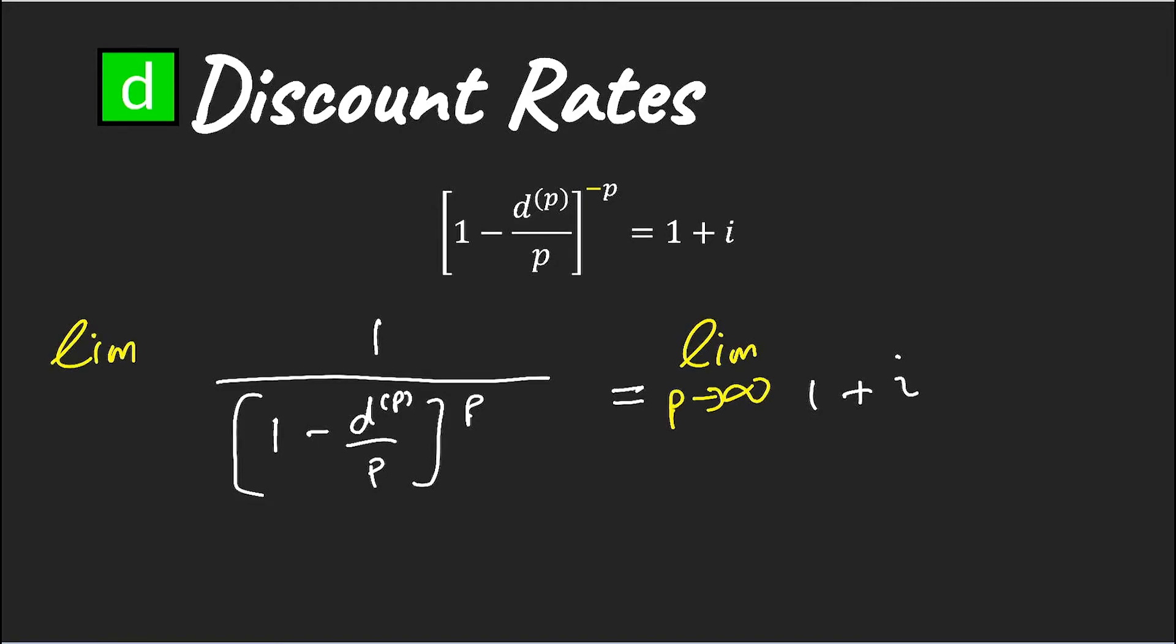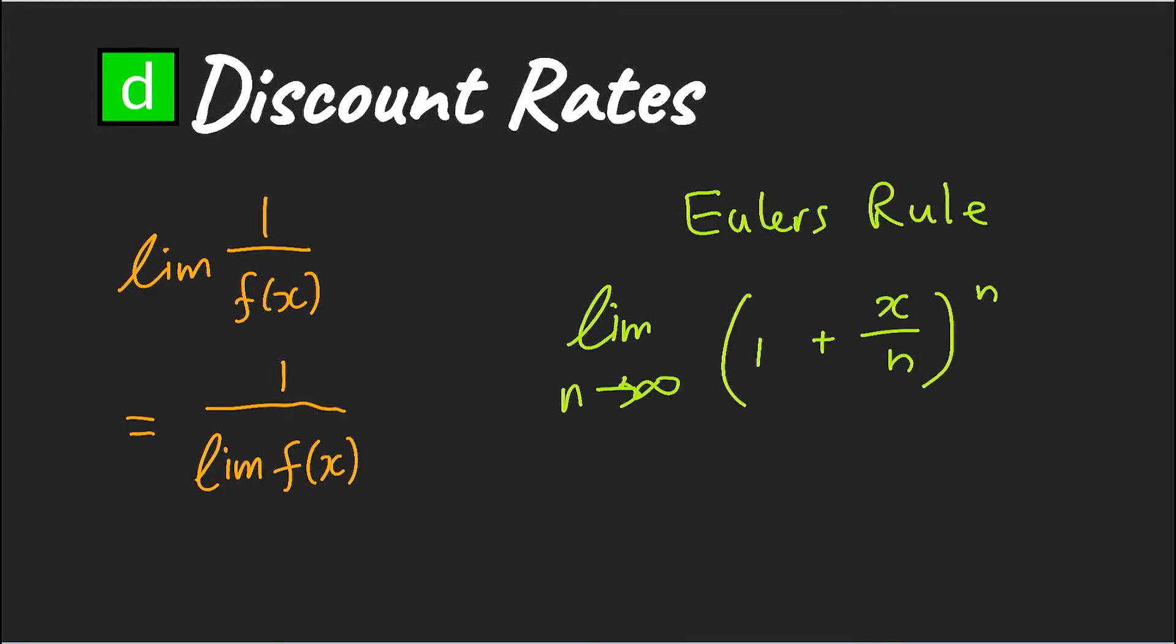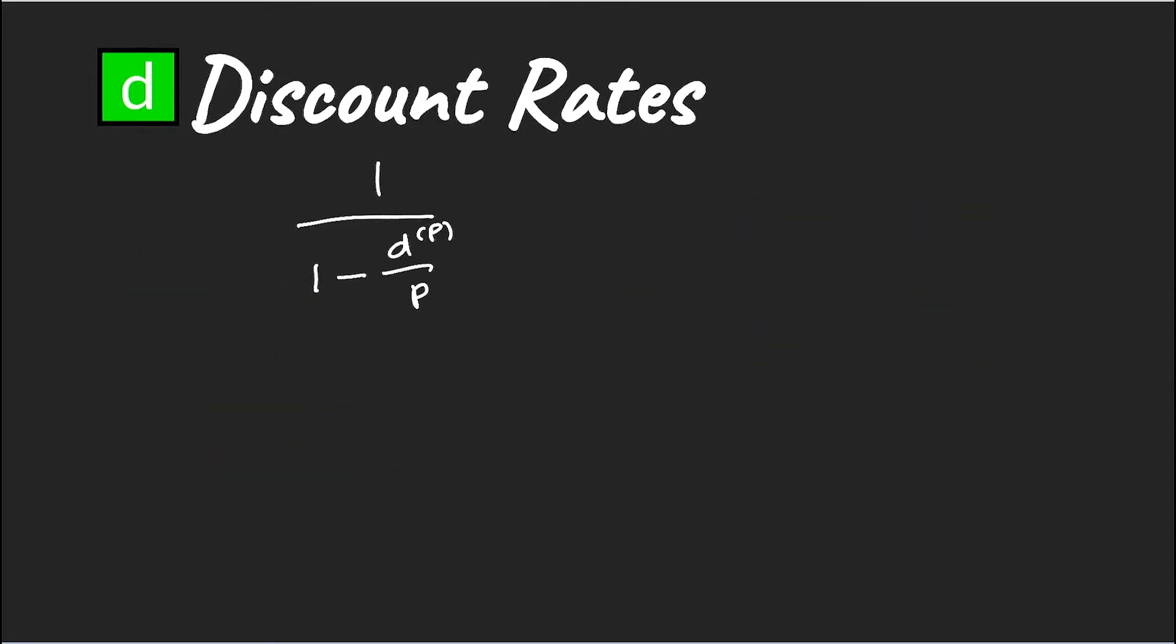We set up our equation and we take the limits of both sides. We then rely on the limit rule as follows. And again, we rely on Euler's rule as follows. By using these rules in our calculations, we can see that our force of interest is equal to our discount rate taken to the limit.